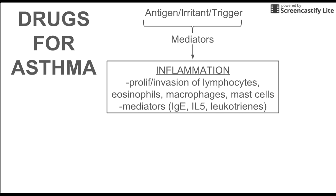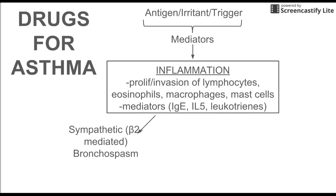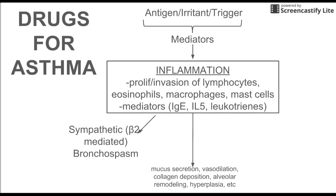Three of the main effects from asthma inflammation are bronchospasm, which is mediated by the beta-2 adrenergic receptor, mucus secretion including vasodilation, collagen deposition, alveolar remodeling, and hyperplasia — all the phenotypic effects of asthma that happen during an attack.